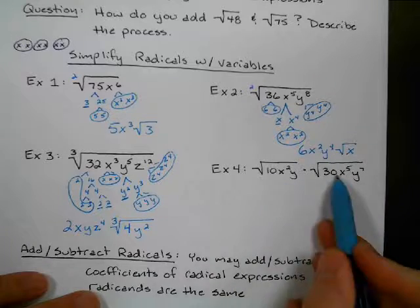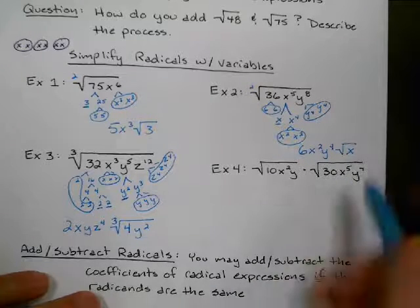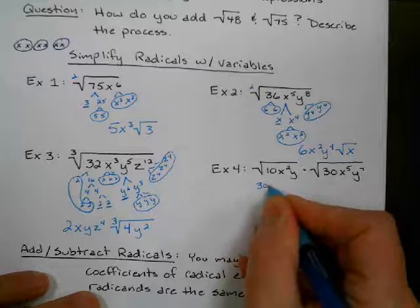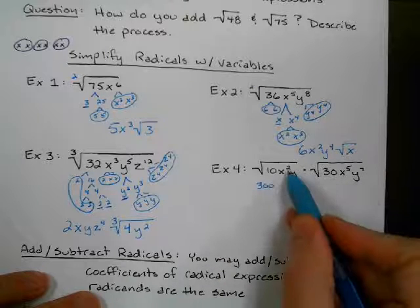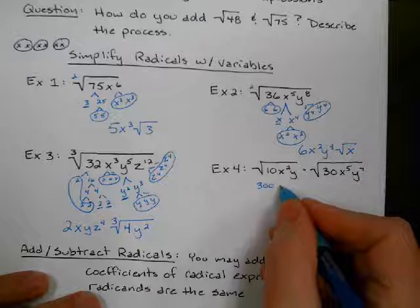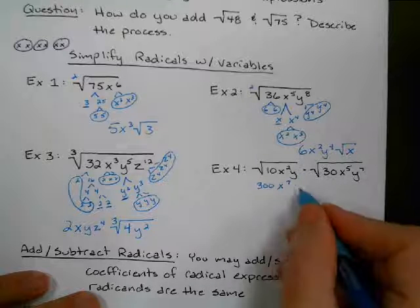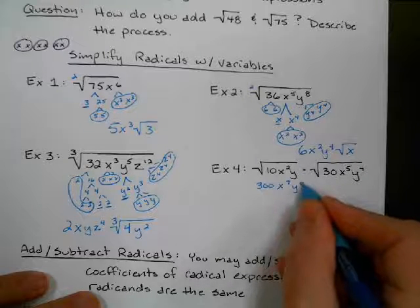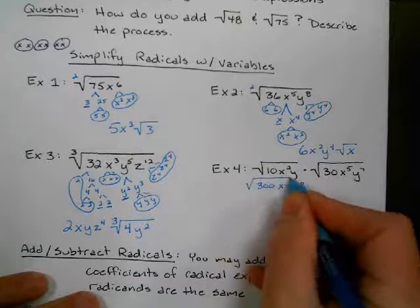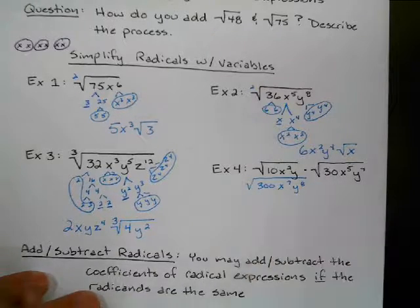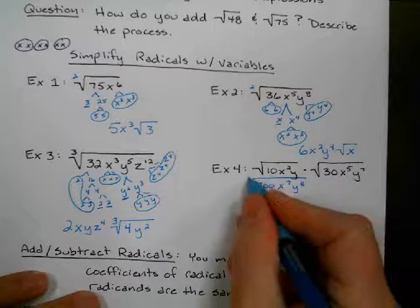Let's go ahead and multiply. Remember, radicals can multiply with other radicals. So this is going to be 300 x to the 2 plus 5. So that's x to the seventh. And then y to the 1 plus 7 is y to the eighth. All right, so I combined my 2 because radicals can multiply with radicals. Let's see. I'm looking for 2 of a kind because this is the square root.